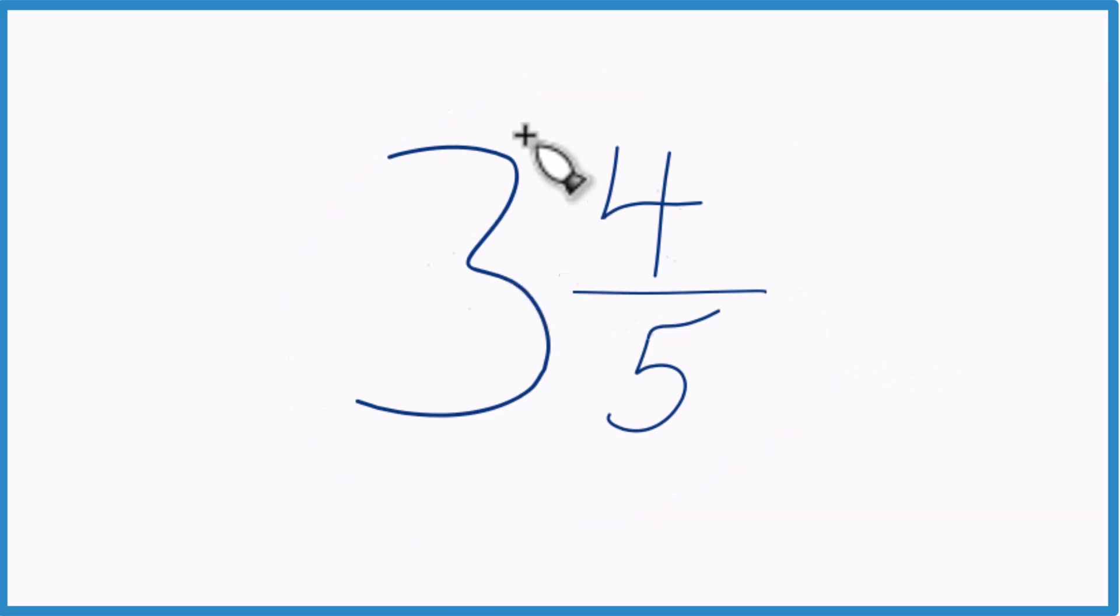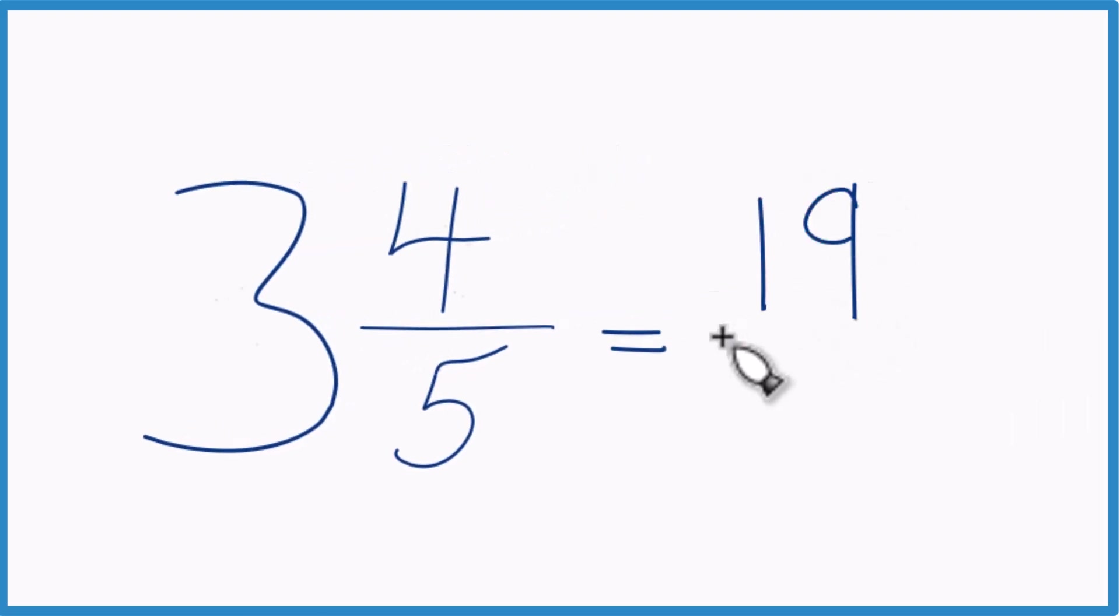You take the whole number 3, multiply that by 5. 3 times 5 is 15, and you add that to 4. 15 plus 4 is 19. That's our numerator. And then just bring the denominator 5 across.